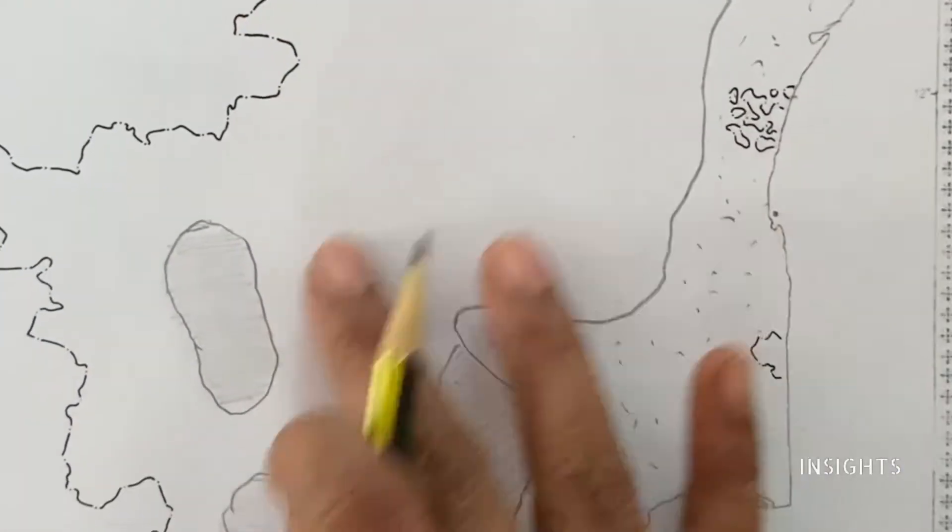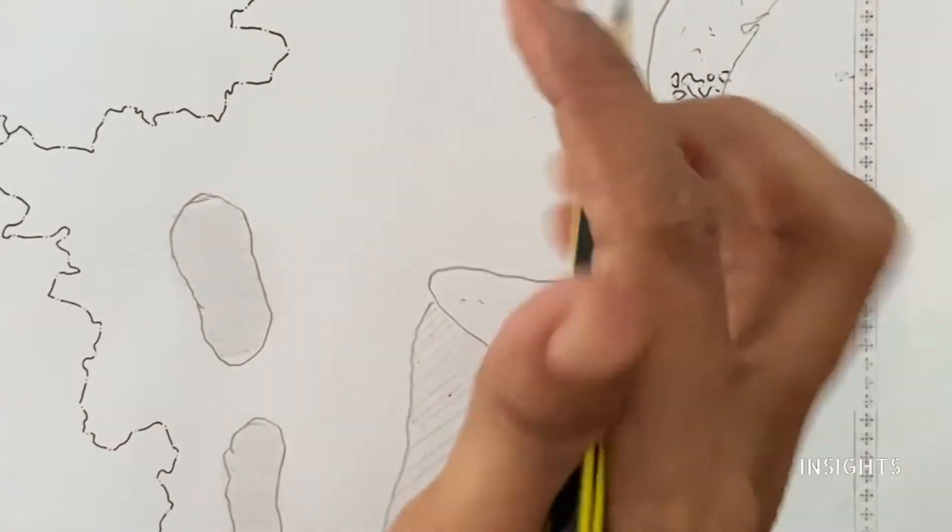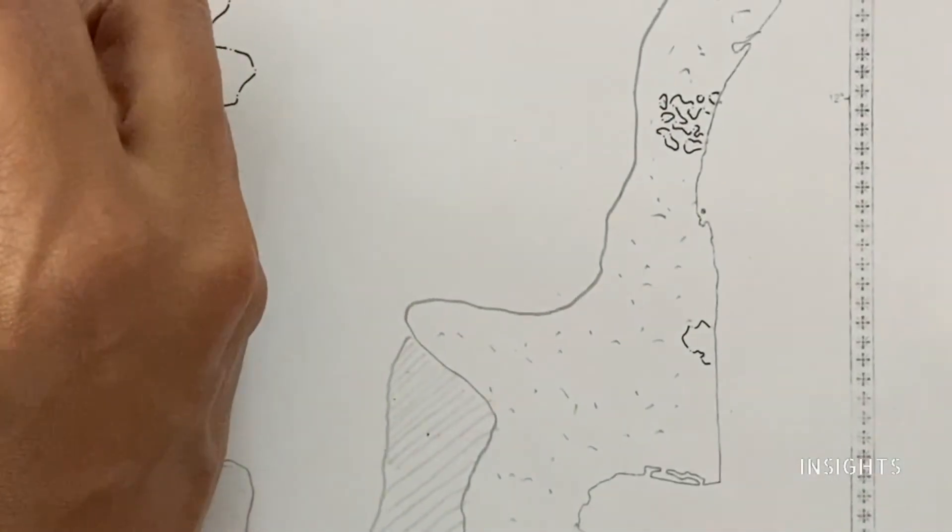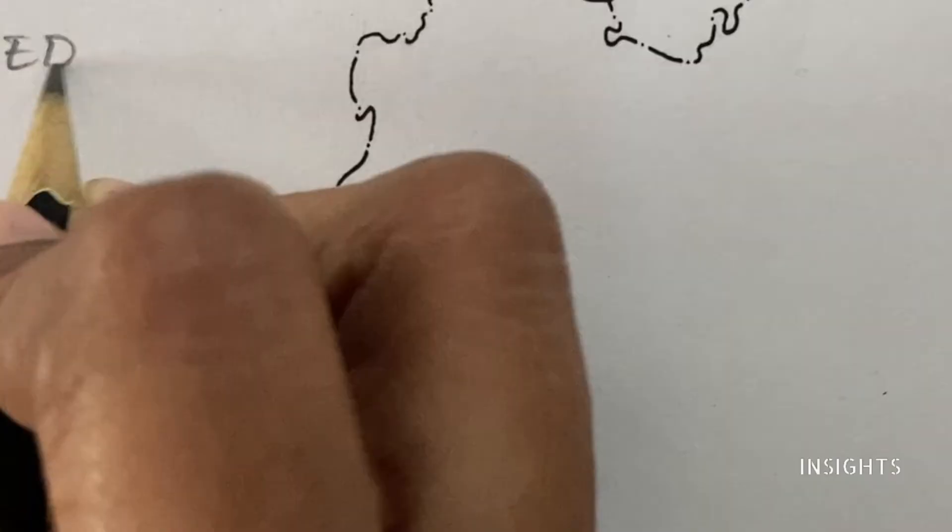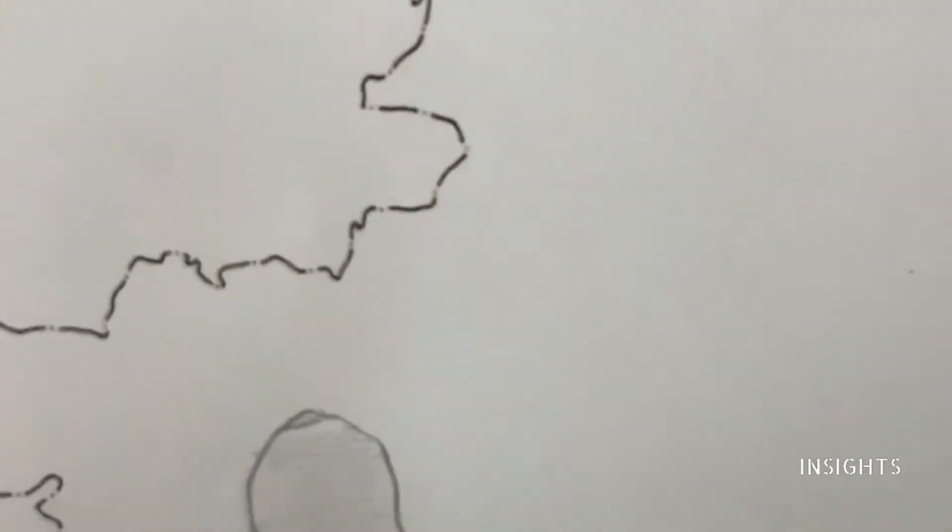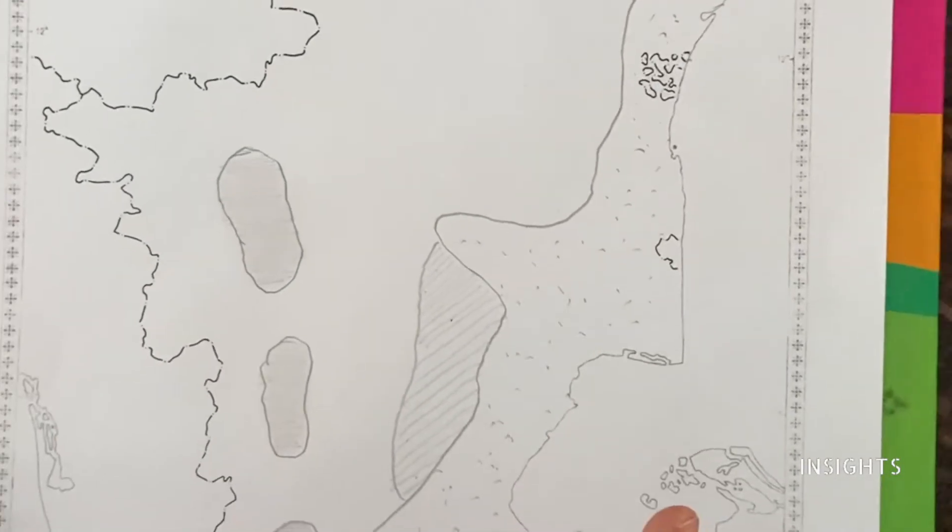Now, the remaining area, the entire area which is plain. In the whole area, there is red soil. We will just leave it plain because there is no point in coloring or doing anything. These are the four major soil types.